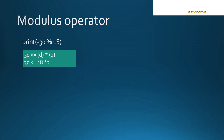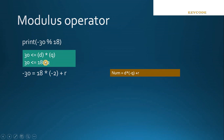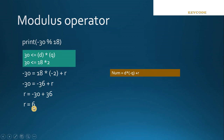Since 30 is less than or equal to 36, it becomes true, so Q is 2. Now applying the formula: the numerator is minus 30, so minus 30 equals 18 multiplied by minus Q. We have Q as 2, so minus 2, plus R. This gives minus 30 equals minus 36 plus R. Finally, R equals minus 30 plus 36, and the value of R becomes 6.